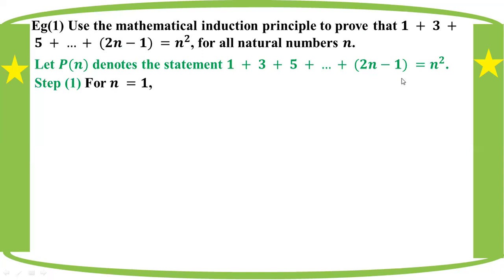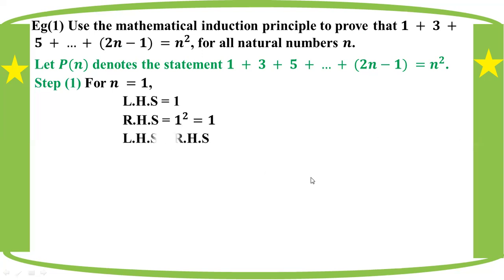We look at the proof: LHS equals 1. If you take n equal to 1, LHS equals 1 and RHS equals 1 squared equals 1. So the statement is true for n equal to 1. Step one is the initial step.